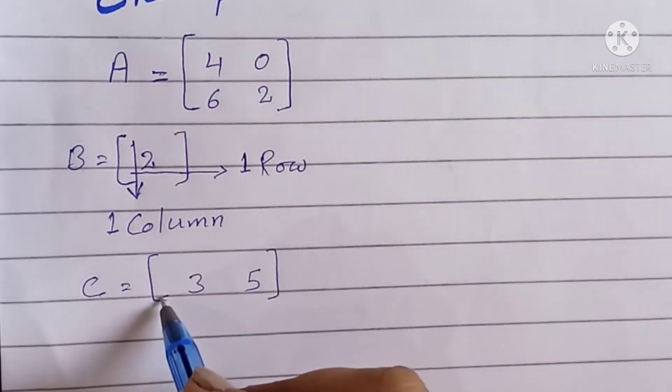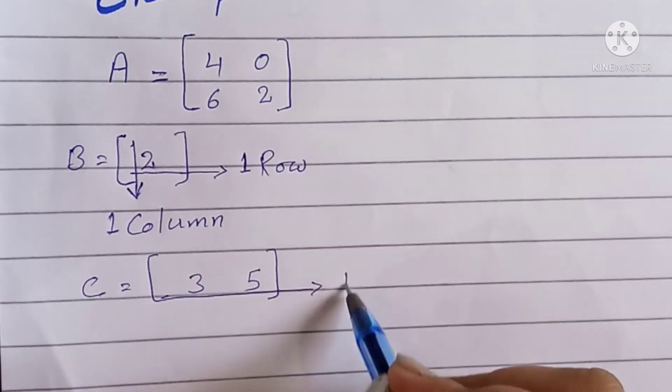Let's see matrix C. It has one row and two columns.